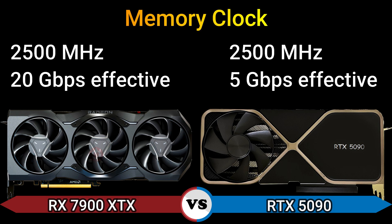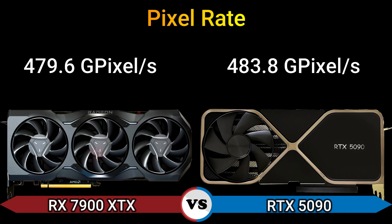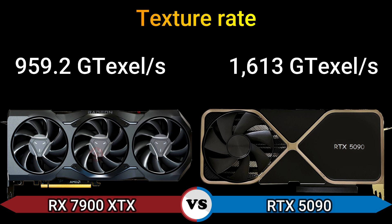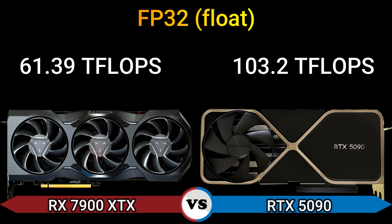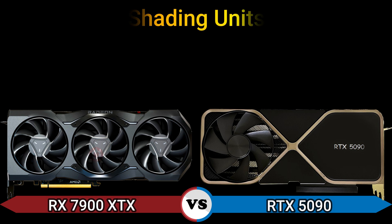Memory clock 2500 MHz 20 GB/s effective and 2500 MHz 5 GB/s effective. Pixel rate 479.6 Gpixel/s and 483.8 Gpixel/s. Texture rate 959.2 GTex/s and 1613 GTex/s. FP16 half: 122.8 TFLOPS (2:1) and 103.2 TFLOPS (1:1). FP32 float: 61.39 TFLOPS and 103.2 TFLOPS.